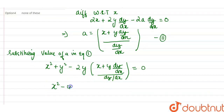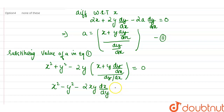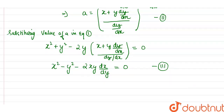Taking LCM, we get x² - y² - 2xy·(dx/dy) = 0. Consider this to be equation number three — this is the differential equation of the family of circles. For the orthogonal trajectory, we replace dx/dy with dy/dx, giving: x² - y² + 2xy·(dy/dx) = 0.